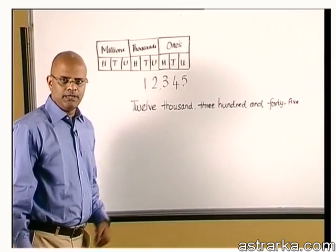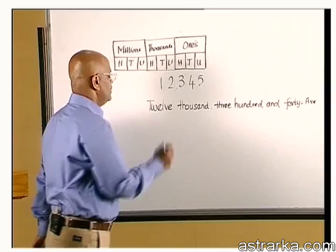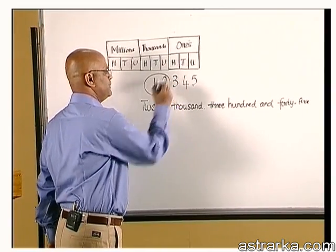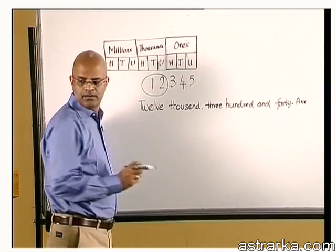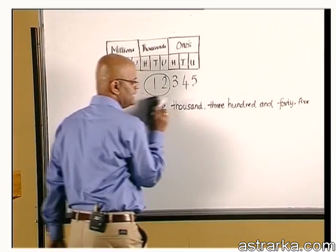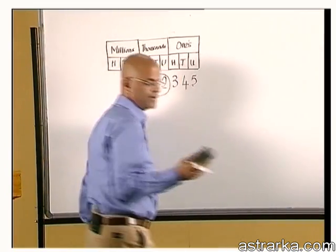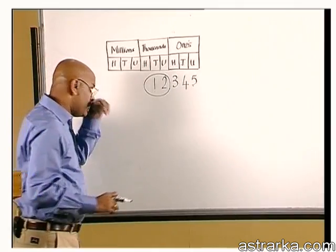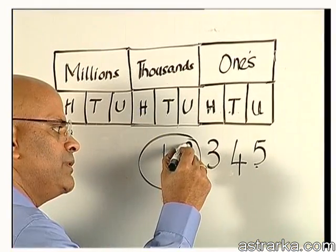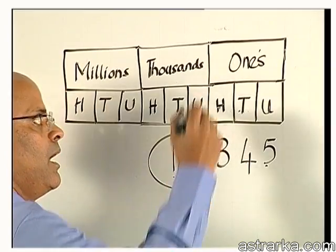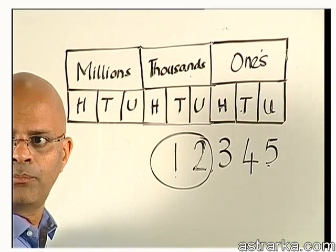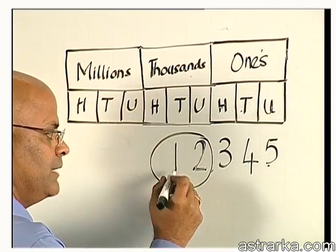In other words, what are we doing? We are reading off the number in that period. Let's actually understand this pattern so we can solve problems easily. You read out the number in that period and you call that, you add the period name, correct?